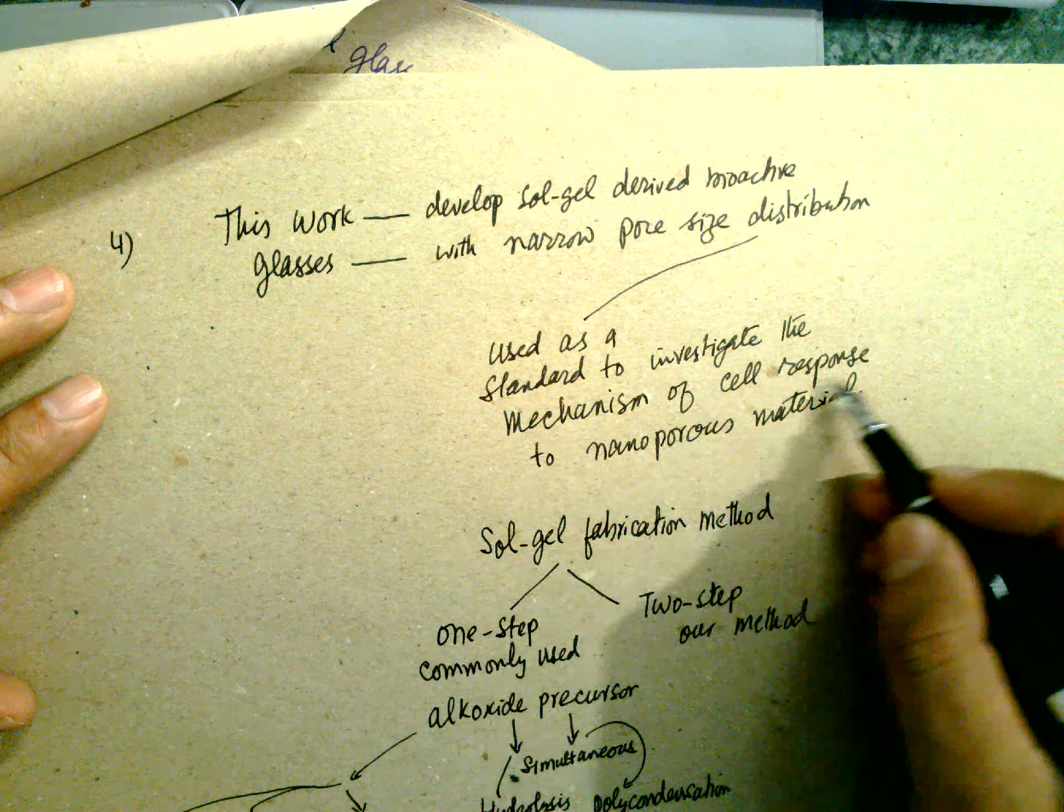Sol-gel fabrication method: there are two, one-step method and two-step method. Commonly used one-step method, alkoxide precursor. It is hydrolyzed and polycondensation happens. Usually TMOS or TEOS or TPOS are used.